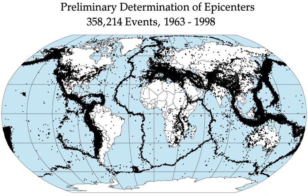Earthquakes can produce slope instability leading to landslides, a major geological hazard. Landslide danger may persist while emergency personnel are attempting rescue. Earthquakes can cause fires by damaging electrical power or gas lines. In the event of water mains rupturing and a loss of pressure, it may also become difficult to stop the spread of a fire once it has started. For example, more deaths in the 1906 San Francisco earthquake were caused by fire than by the earthquake itself.